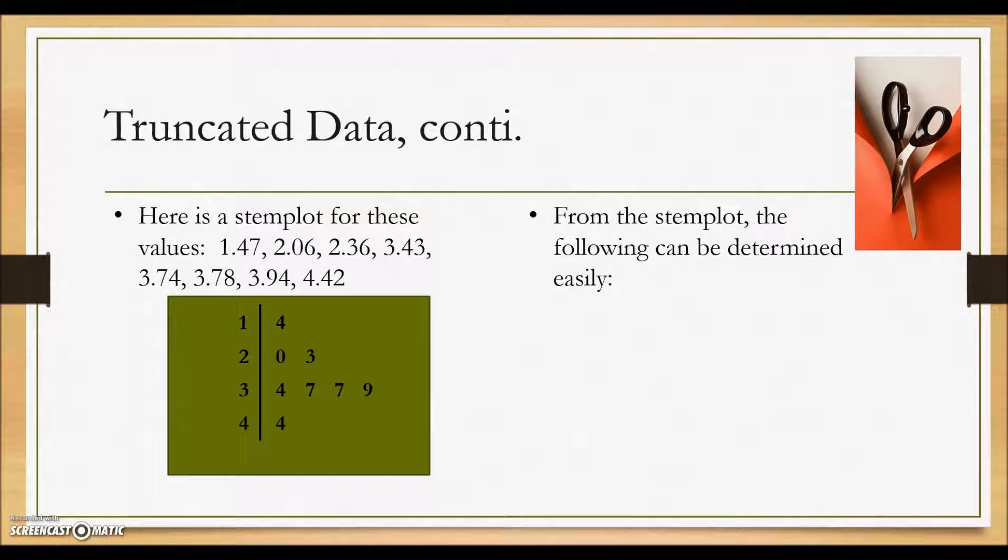So here's the stem plot that was generated from the data with truncating each of the values: 1.4, 2.0, 2.3, here's our 2 with the 3, 3.4, and so on for the rest of the values.